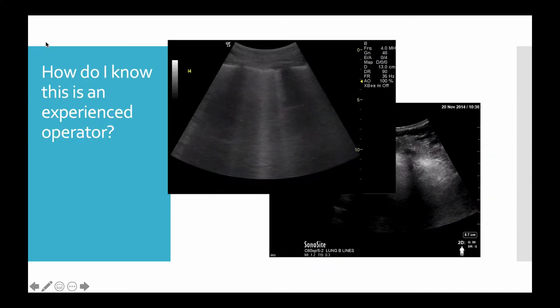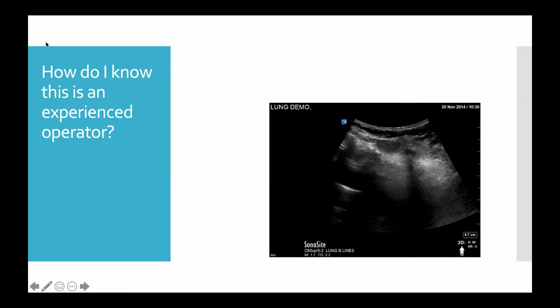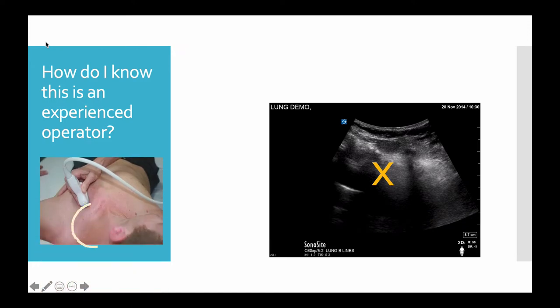Now, how to tell an experienced operator. An experienced operator can usually get the pleural line horizontally across the screen, meaning they've got good hand control, and they want that pleural line to be very thin — it means they've got the right angle with the pleura. Conversely, if the pleural line is indistinct and slides down to the side, it means that whoever was doing this doesn't appreciate the curve of the chest wall under the pectoralis major, and the fact that you actually have to point the probe a little towards the mediastinum in the top region. On the posterior chest you actually have to point it the other way when you're paraspinal.